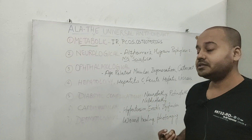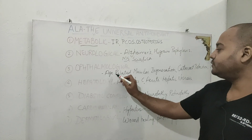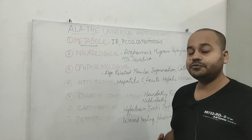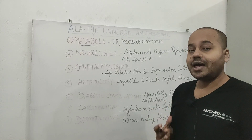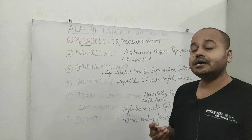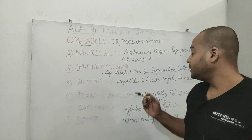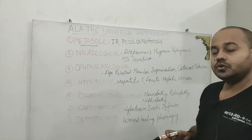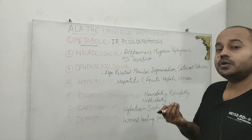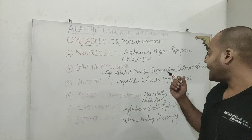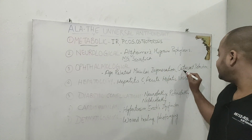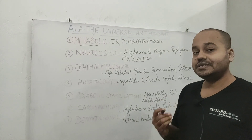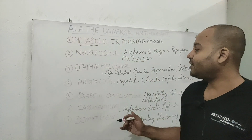The third important benefit is ophthalmological. Because alpha lipoic acid is very good at decreasing oxidative stress, it can prevent age-related macular degeneration. It also helps achieve better sugar control, reducing sorbitol accumulation in the lens — since aldose reductase can convert high glucose to sorbitol, which accumulates in the lens and causes cataract. Alpha lipoic acid can therefore prevent cataract, and also prevents glaucoma by decreasing oxidative stress.